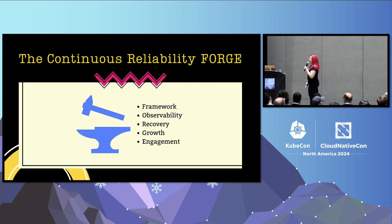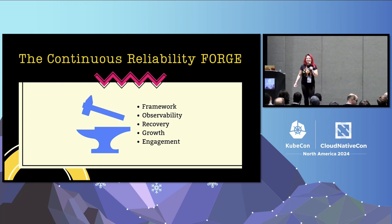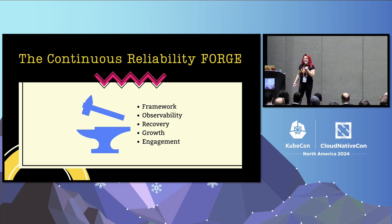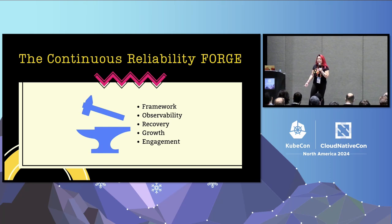I made this up entirely because the acronym was cool. First, we should have a framework — a resilient infrastructure design. If the design isn't good, then all of the observability isn't going to do you much good. The next one is O for observability. You still need that. It is a means to an end, not the end in itself. There's recovery — what do you do when something fails? There's growth — do you learn from your mistakes? And there's E for engagement — the culture of reliability in your company matters.